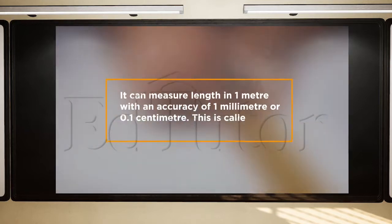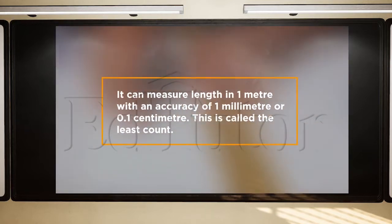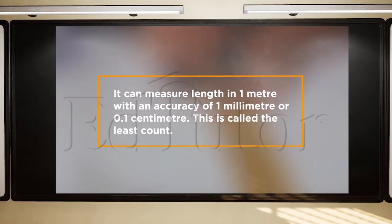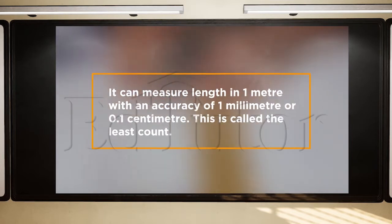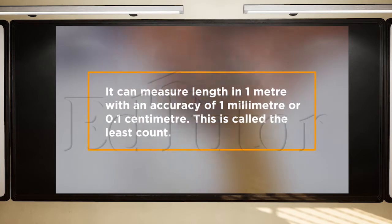It can measure length in 1 meter with an accuracy of 1 mm or 0.1 cm. This is called the least count. But the question is, if they can measure length in 1 meter, then how can their accuracy be 1 mm or 0.1 cm?